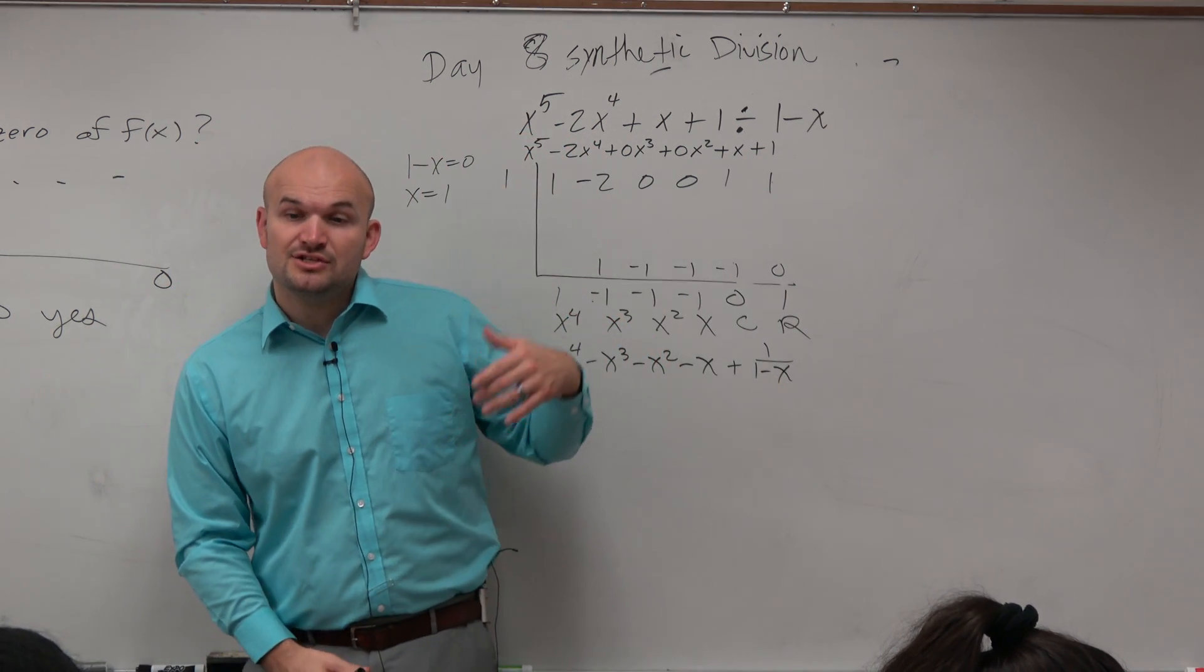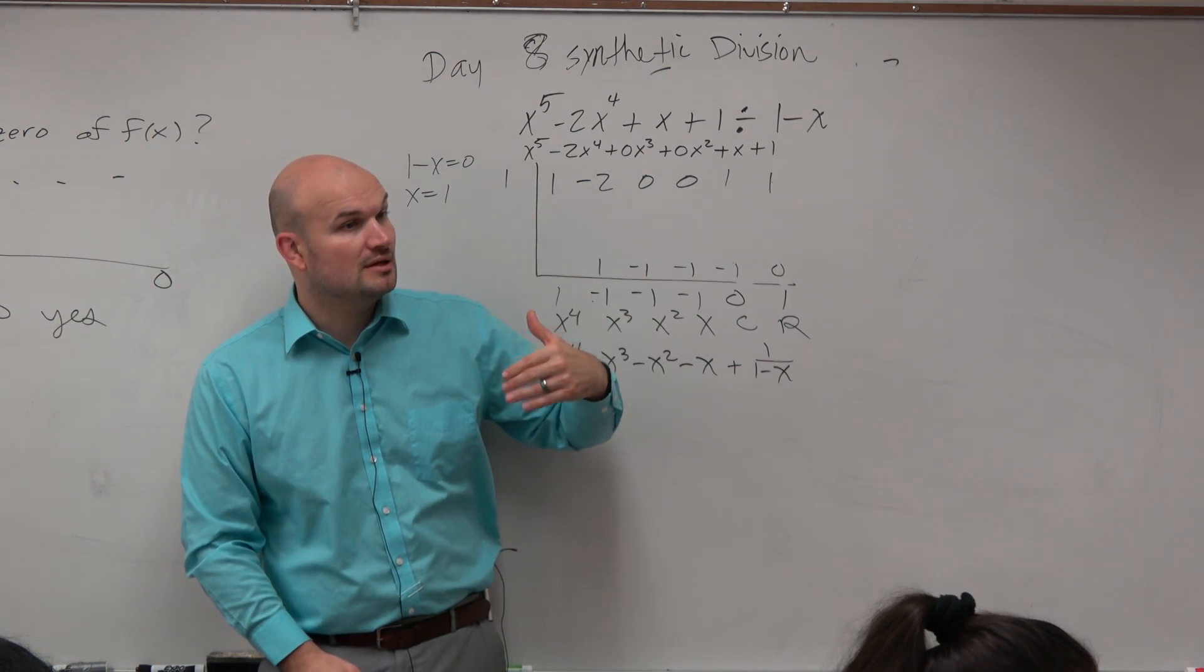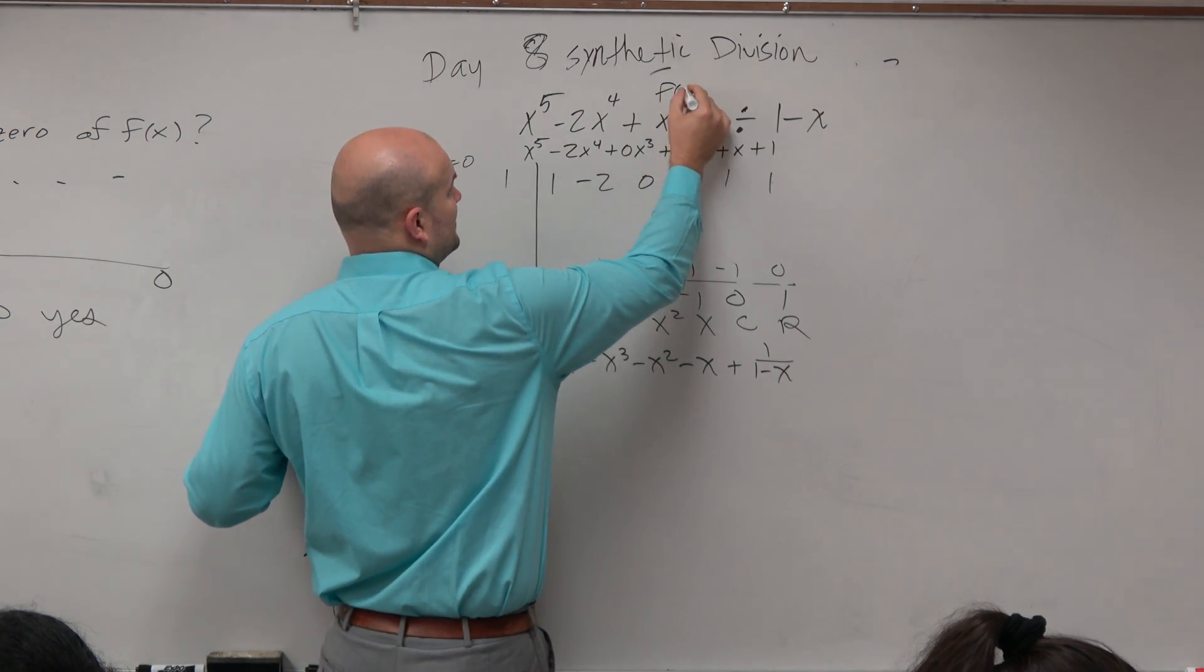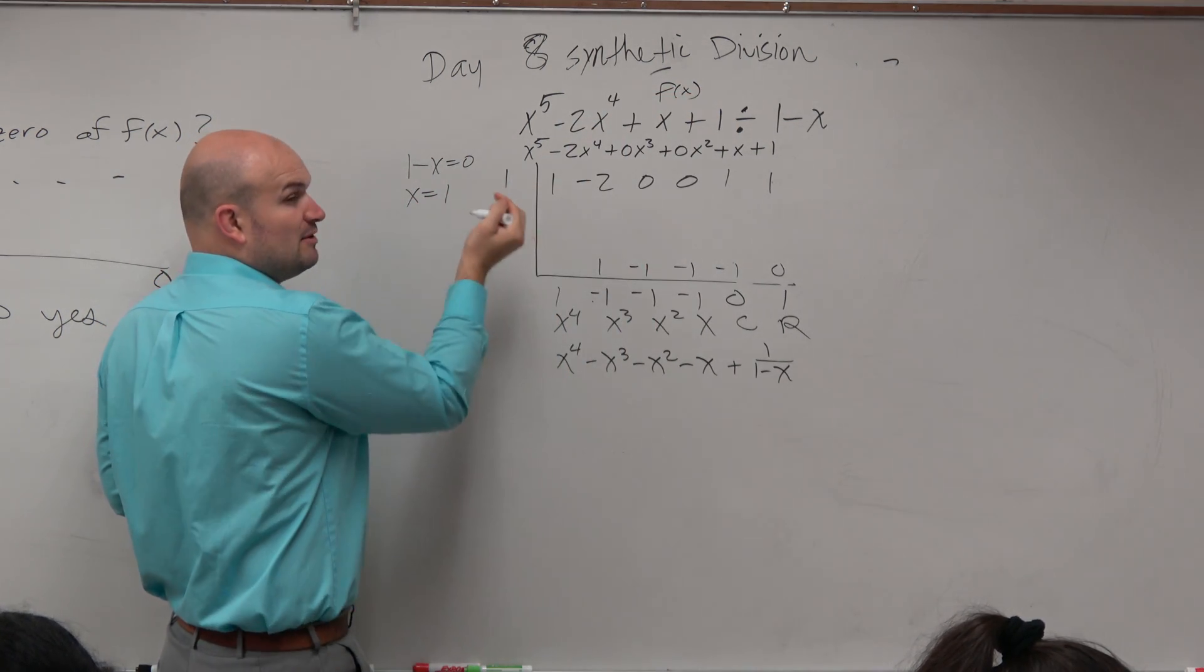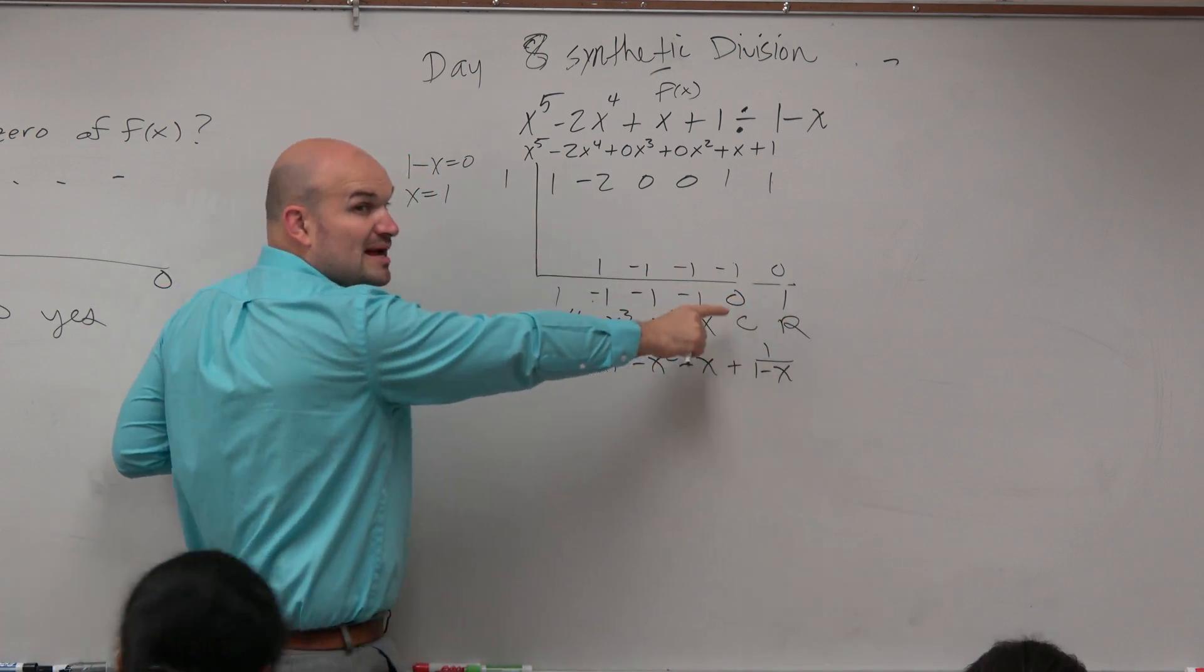All right? But what I asked you guys to do was to apply synthetic division and then check your answer using the remainder theorem. So if we're going to say like this is our dividend, we'll just call this f of x, if I want to check my answer, all I have to do is plug in my potential 0. It's not a 0 because I have a remainder, right?